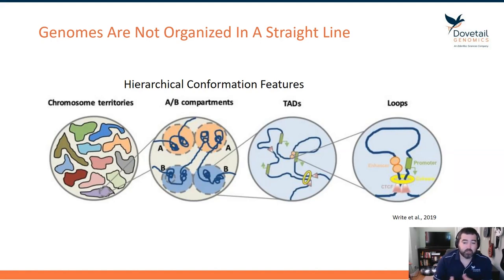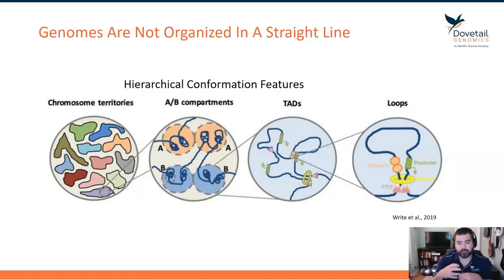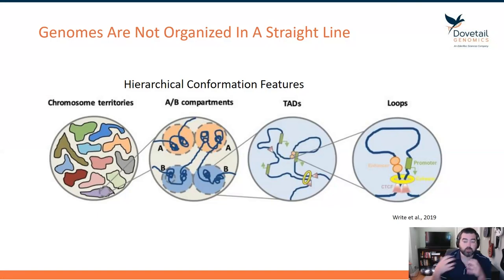Within these two compartments, there's another set called TADs — topologically associating domains — where clusters of linked-function genes get grouped together through CTCF-mediated chromatin extrusion and folding. And then even further, there are chromatin loops often associated with enhancer-promoter interactions, where the enhancer recruits the transcriptional machinery to turn genes on.